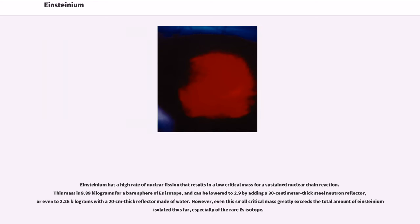Einsteinium has a high rate of nuclear fission that results in a low critical mass for a sustained nuclear chain reaction. This mass is 9.89 kilograms for a bare sphere of Es-254 isotope, and can be lowered to 2.9 by adding a 30 centimeter thick steel neutron reflector, or even to 2.26 kilograms with a 20 centimeter thick reflector made of water. However, even this small critical mass greatly exceeds the total amount of Einsteinium isolated thus far, especially of the rare Es-254 isotope.